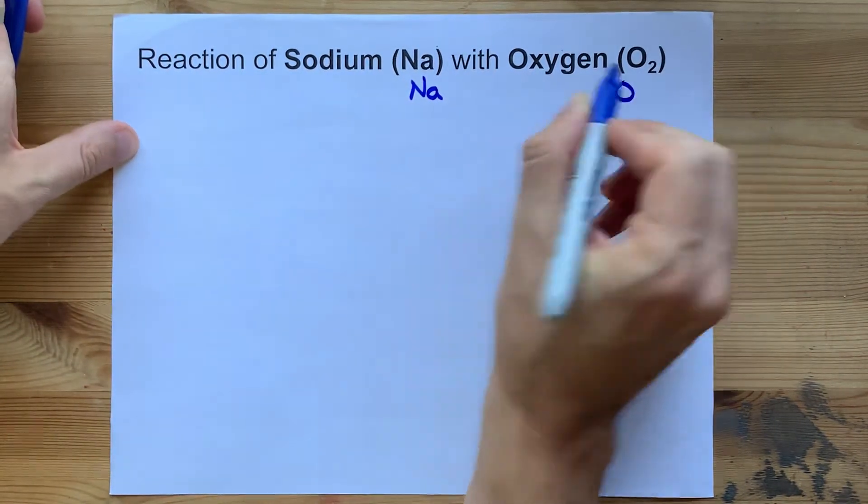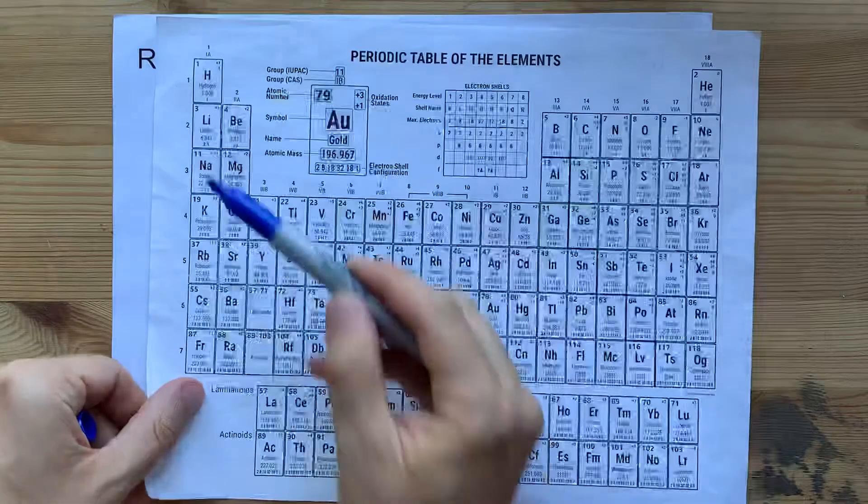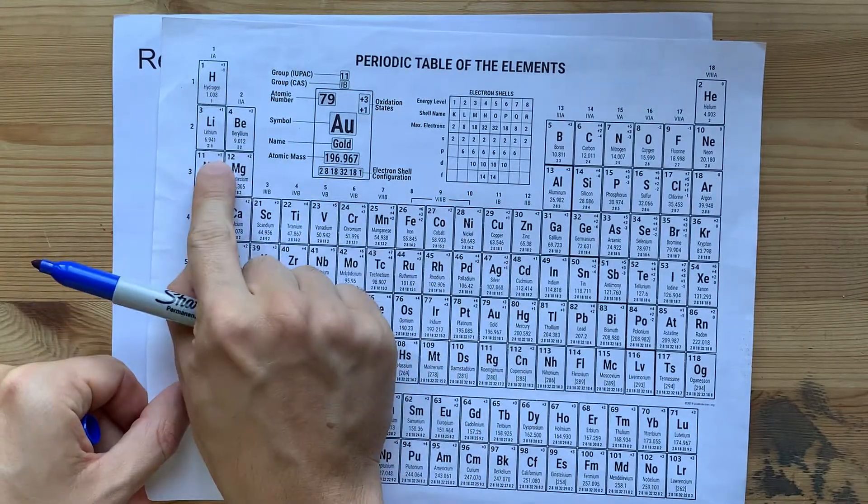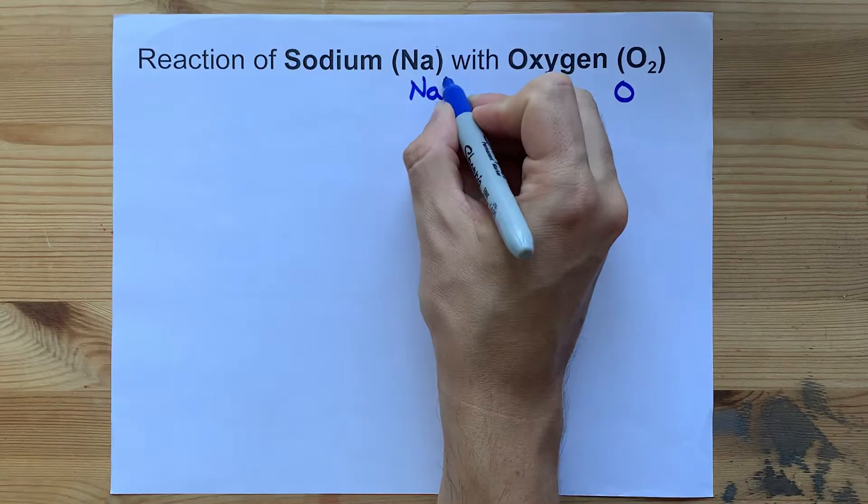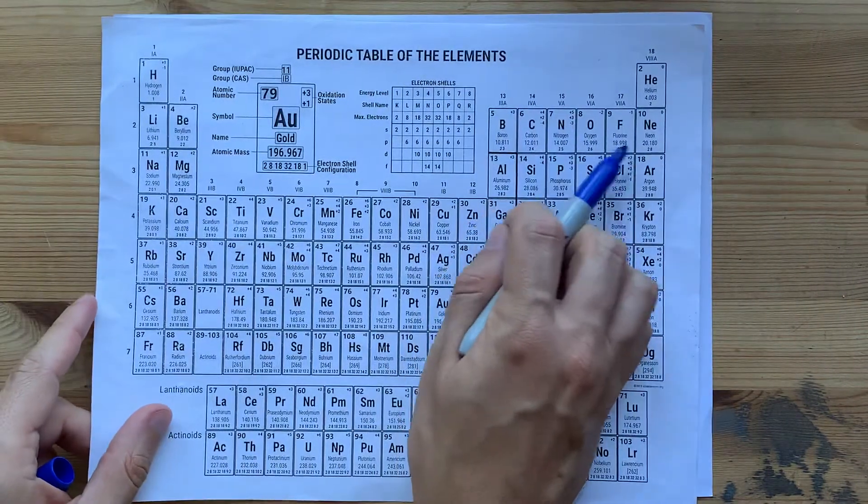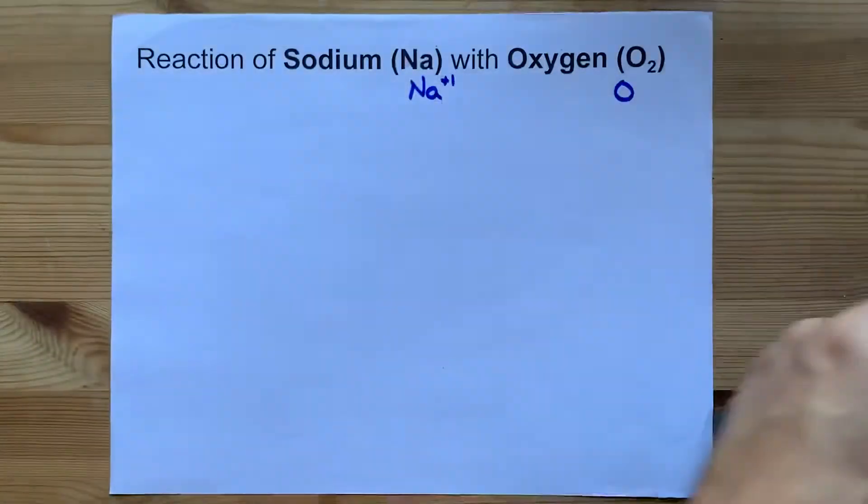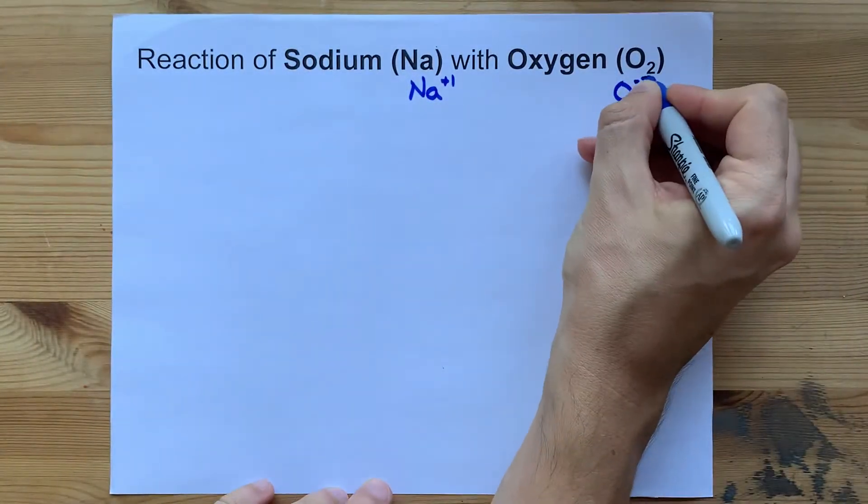It's useful to know what charge each of them wants. Because sodium is in the first column, it wants a charge of plus one because it wants to have lost one electron. Oxygen is two electrons short of having a full octet, so it wants a charge of minus two.